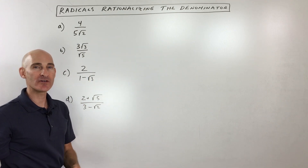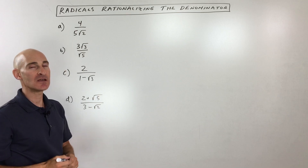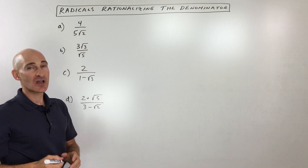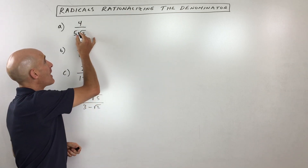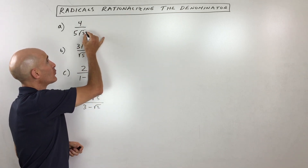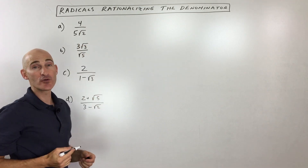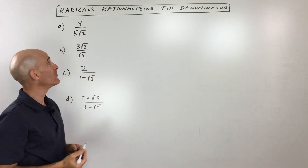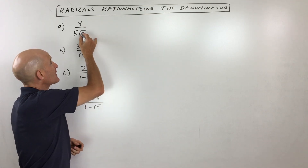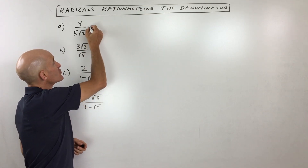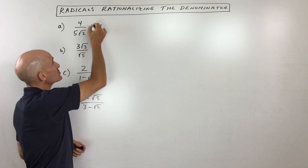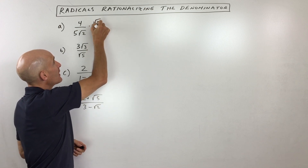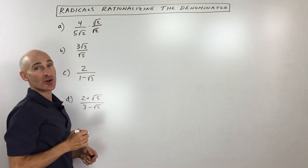So how do we get rid of it? How do we eliminate it? Well, there are a couple different techniques. Now, if you just have a monomial — monomial means just one group, 'mono' means one — we want to get rid of the square root of two. So what we're going to do is multiply the denominator by square root of two and the numerator by square root of two.